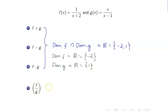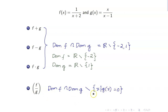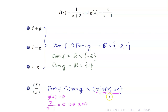For the domain of f over g, it equals the intersection of the two domains, but this time you take away the values of x which would make the denominator equal to zero. When is g of x equal to zero? g of x equals zero when x over (x minus 1) equals zero, which means x equals 0. So therefore, starting from the set of all reals minus negative 2 and 1, you also take away 0. That is the domain of f over g: all reals minus negative 2, 0, and 1.